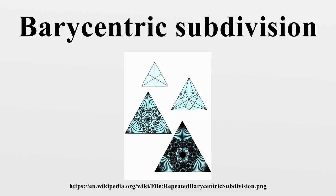Relative Barycentric Subdivision: for simplicial complexes, one defines the relative barycentric subdivision of K modulo L, which consists of those simplices with vertices associated to a sequence of proper faces of K and barycenters of simplices in K. Clearly, L remains a subcomplex of the subdivision, and only the simplices away from L shrink.